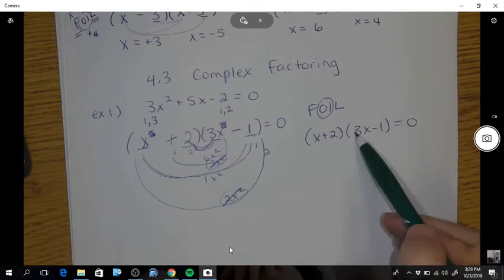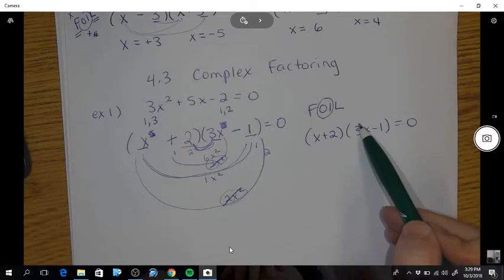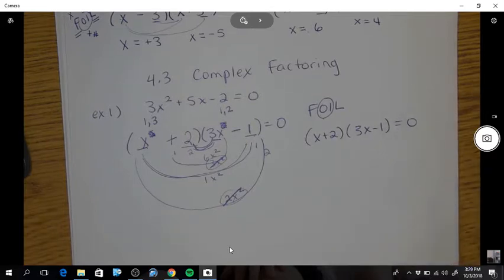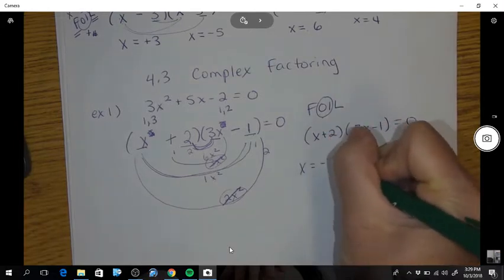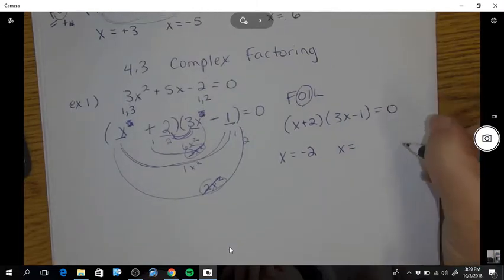Okay, so there's my factors. Check my foiling. This times this is 3x squared. Subtract 1x plus 6x. So now that's 5x and then minus 2. So my solutions are x could be negative 2.